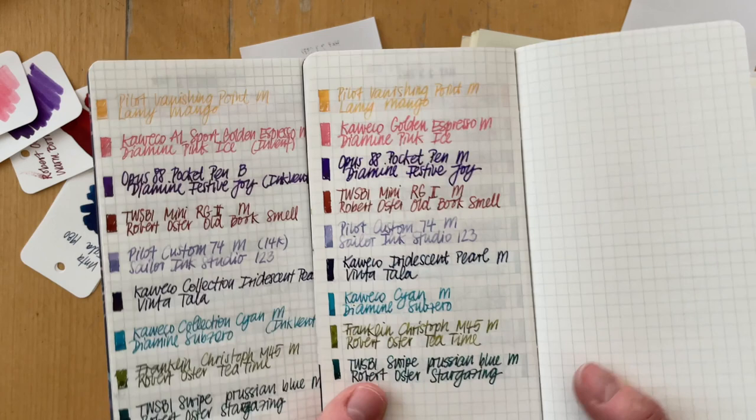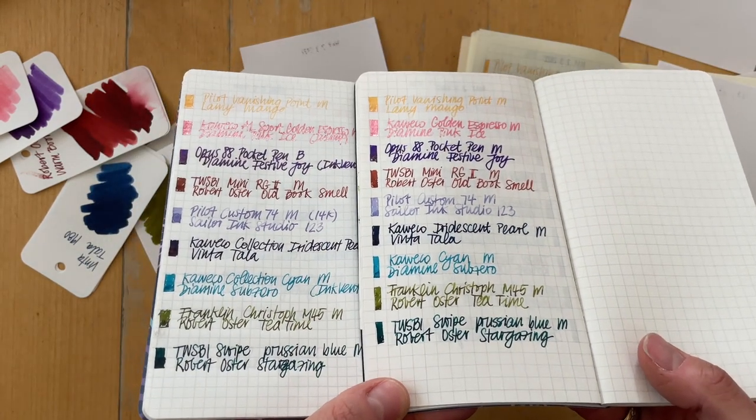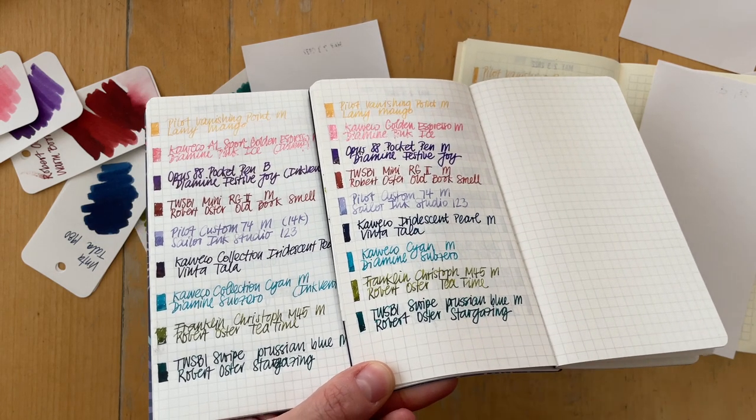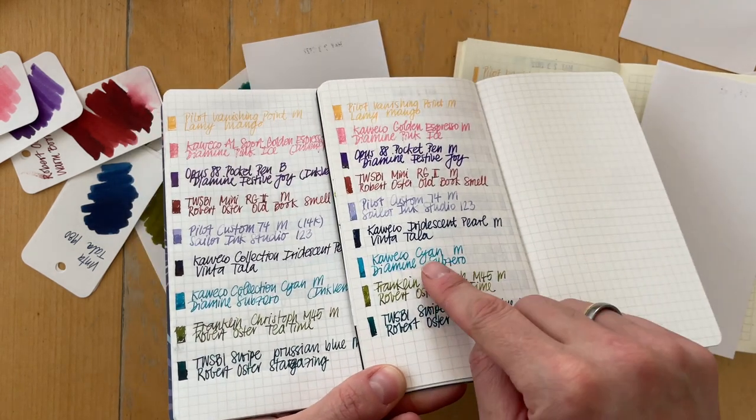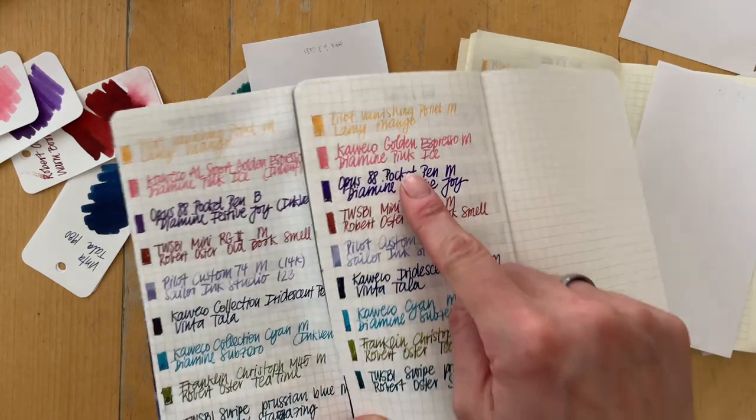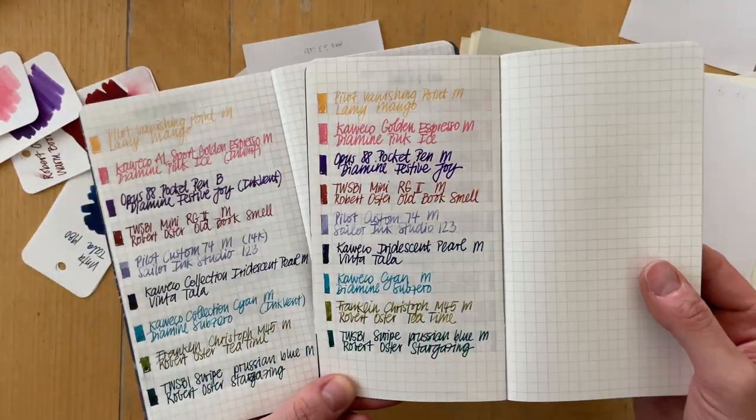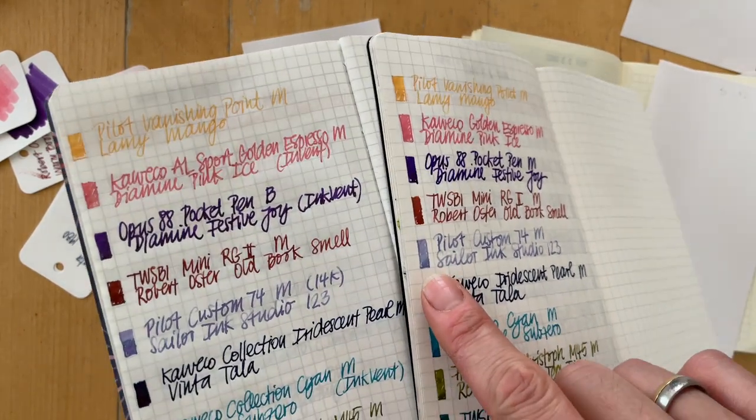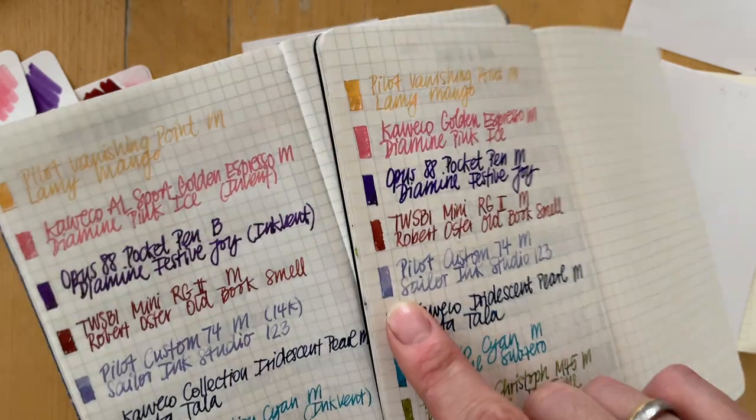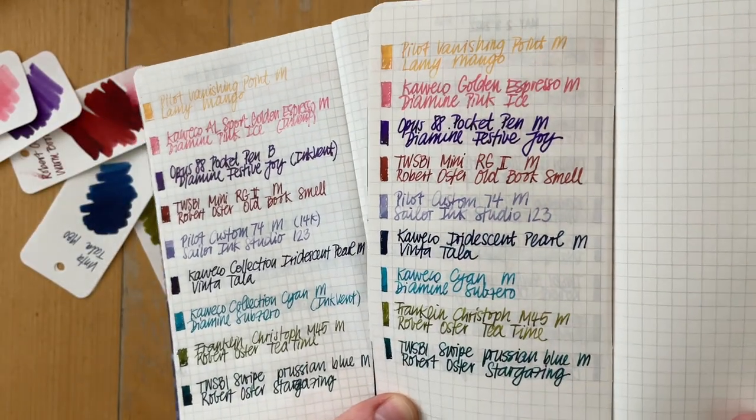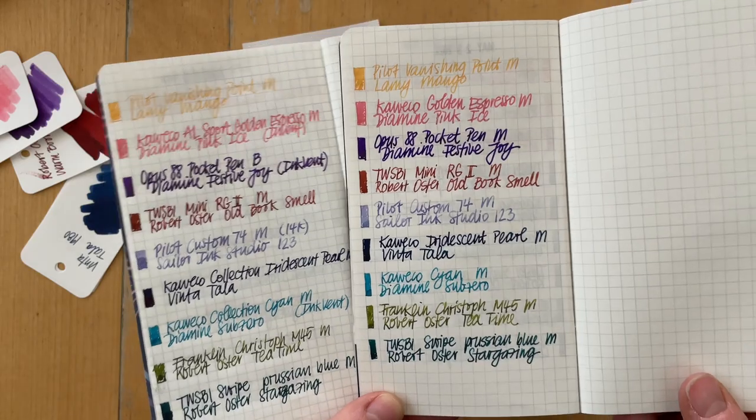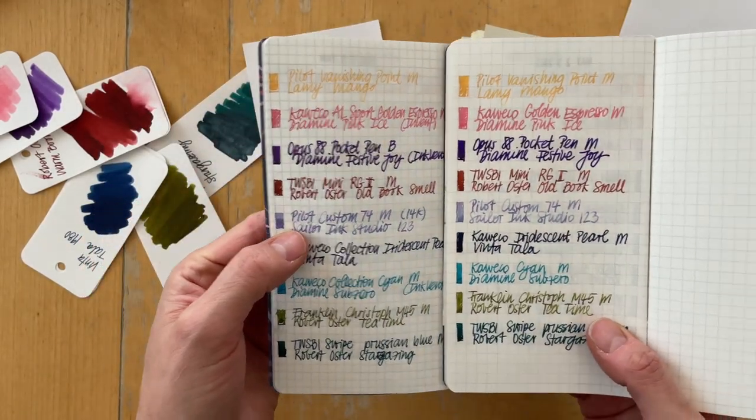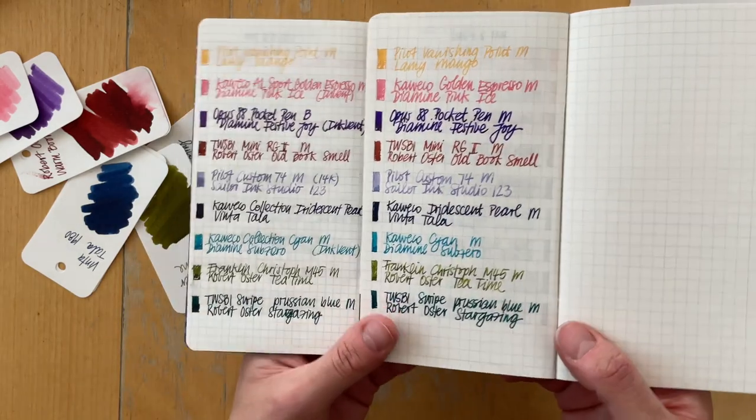Okay. I made a mistake right here. There is shimmer in all these shimmer inks except for the stargazing. So I guess my theory was right. There's not a lot to be seen here, but this one is a super shimmer. I like the sailor ink studio. You can see in this teeny tiny swatch. You can see the chromo shading, but with the writing it works. It's readable, but it's not as different and as intriguing as on the Tomoe river paper.